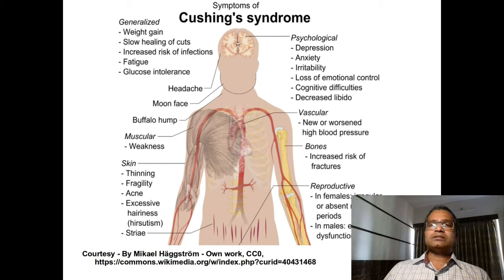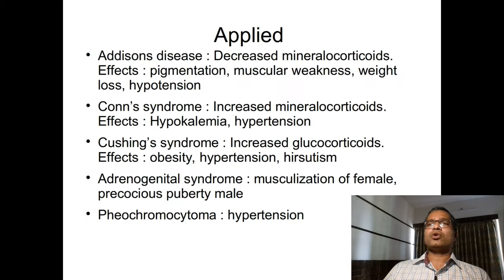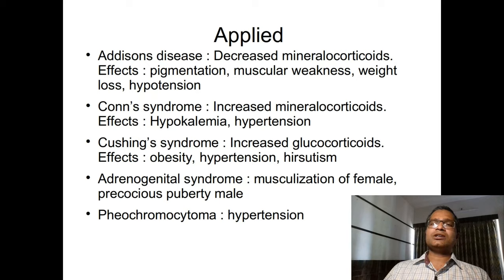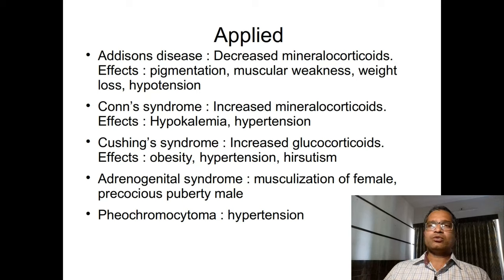Cushing's syndrome is caused by increased secretion of glucocorticoids, resulting in truncal obesity, hypertension, and hirsutism in females.